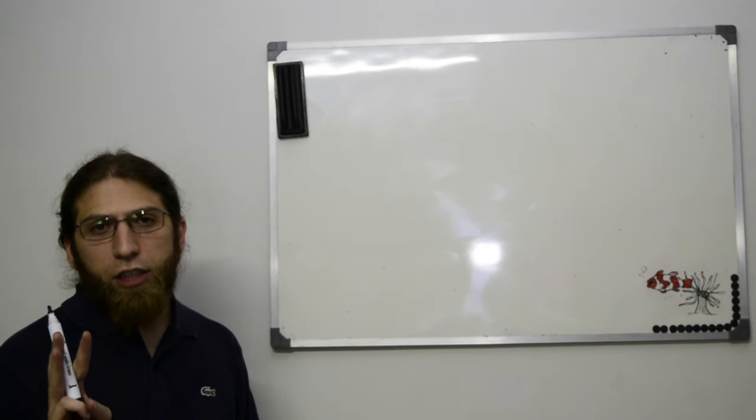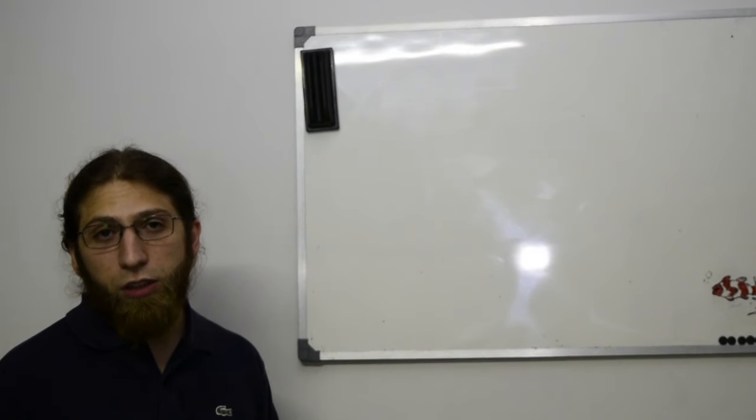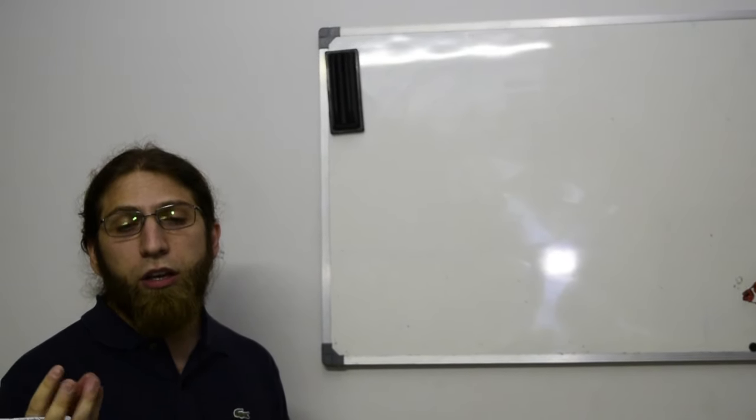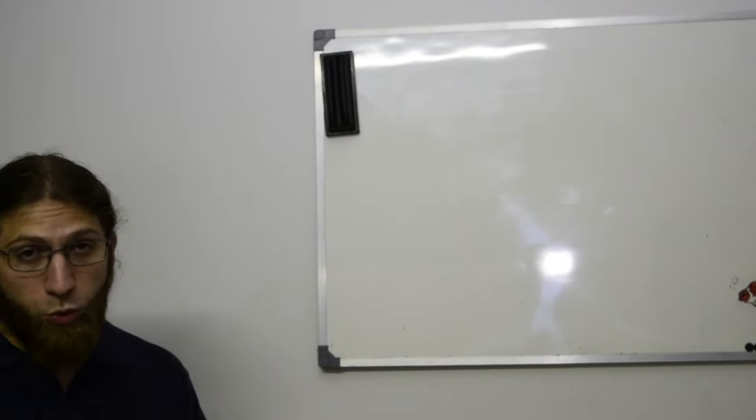O emelo tem três principais patógenos. Tem o amilodinium ocelato, que é um dinossauro gelado, e tem dois ciliados, que é a bruclinella hostilis, e o criptocário irritante, que é o que a gente conhece como o ictio.